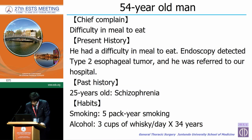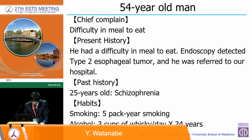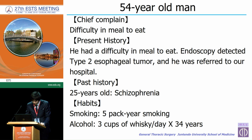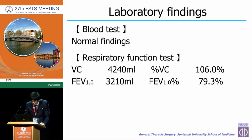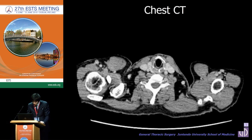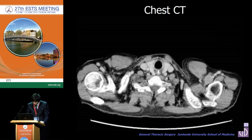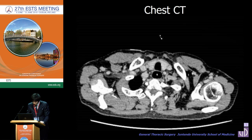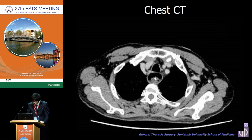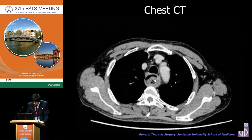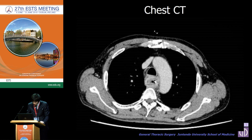A 54-year-old man had difficulty swallowing. Endoscopy detected a type 2 esophageal tumor and he was referred to our hospital. He had a past history of schizophrenia. Regarding laboratory findings, blood tests and respiratory function tests were normal. Chest CT showed a gastrointestinal tube was detected at the esophagus, and the esophageal tumor with secondary wall involvement was detected along the carina to the left main bronchus.